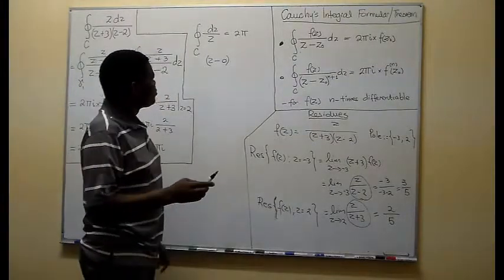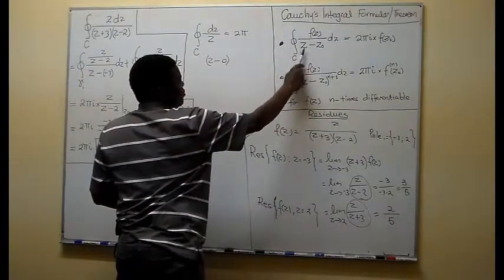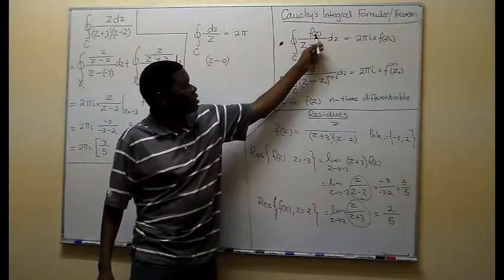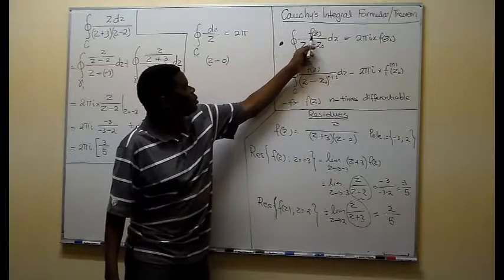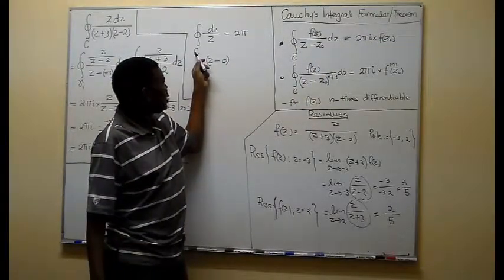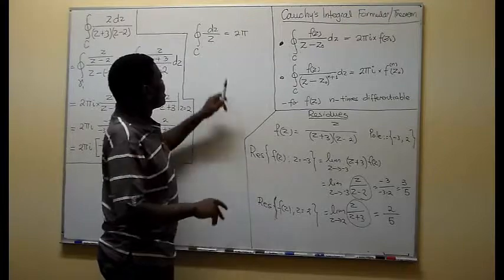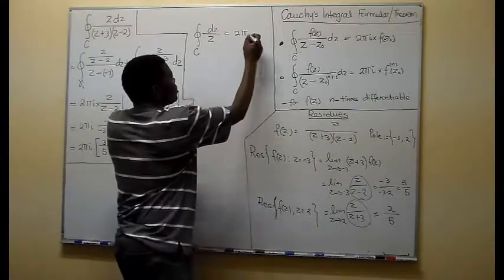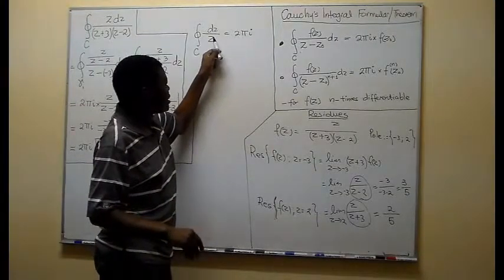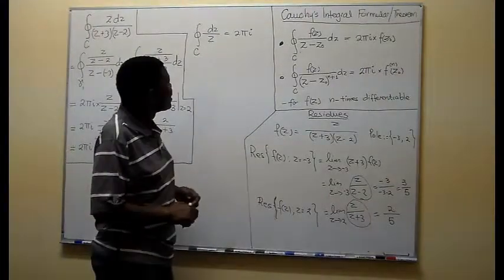I would like to discuss with you and show you that this is actually a particular case of this theorem whereby f(z) is a constant, and the constant function will definitely be analytic in and on any curve because it's always defined. And then we saw also that this happened when the power of z here was 1, and in the case the power of z was different from 1, the integral was zero.